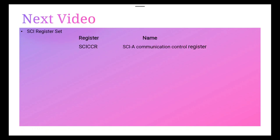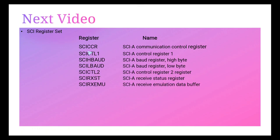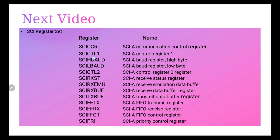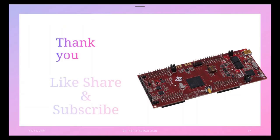In the next video we will be looking at the SCI register set. These include the SCICCR communication control register, SCICTL1 and SCICTL2 control registers, baud rate select registers, status registers, emulation data buffer register, receive data buffer, transmit data buffer, FIFO transmit, FIFO receive, FIFO control, and parity control registers. We will look at how to initialize these registers in the next lecture. Thank you, and don't forget to like, share, and subscribe.